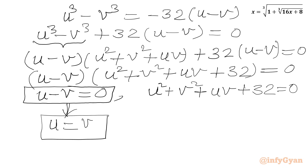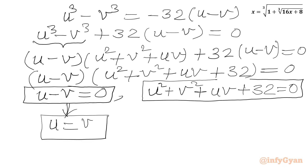From the second equation: u squared plus v squared plus uv plus 32 equal to 0. We will rearrange this expression to analyze it further.